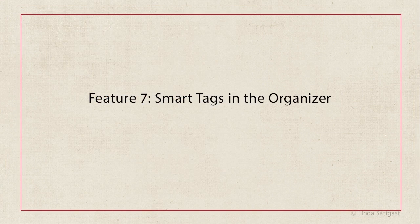Feature seven is Smart Tags in the Organizer. The Organizer is a program that comes bundled free with Photoshop Elements to help you organize and more easily find your photos and files, among other things. I love the concept of Smart Tags because they tag my photos and files for me based on the content of the photos, and I need all the help I can get.